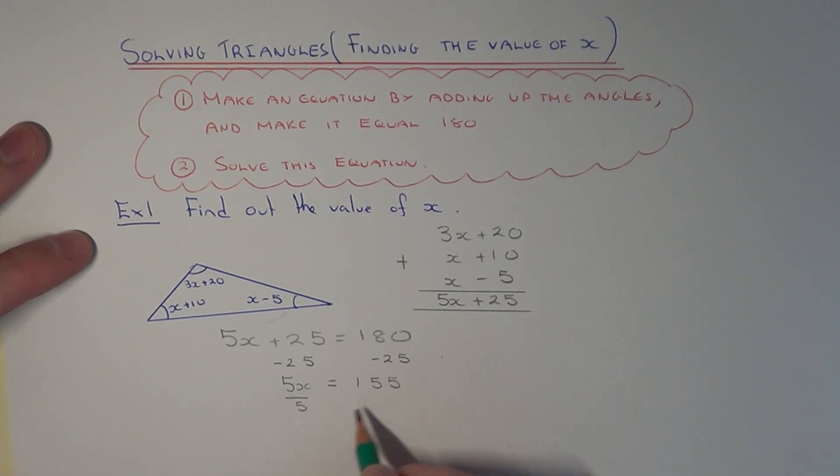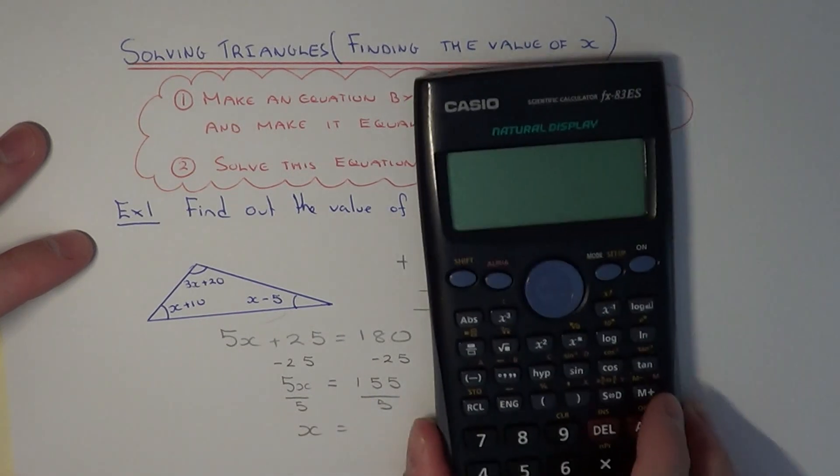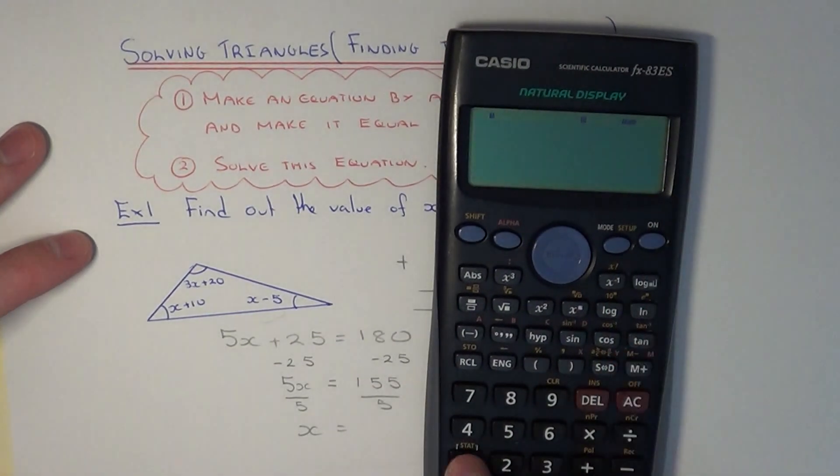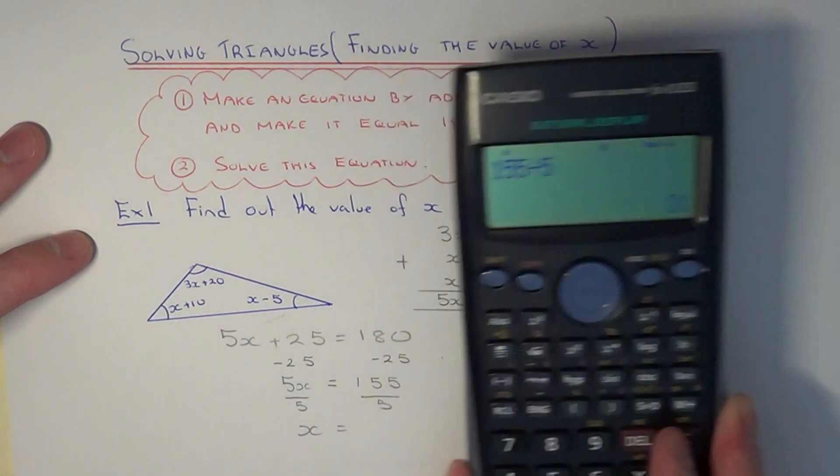And then we just need to get rid of the 5 next. Do this by dividing both sides by 5. So 155 divided by 5 gives us x as 31 degrees.